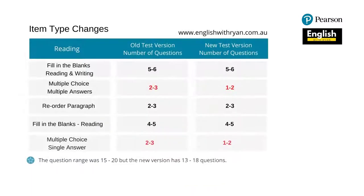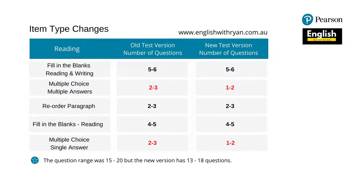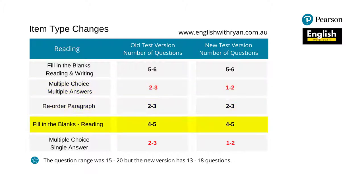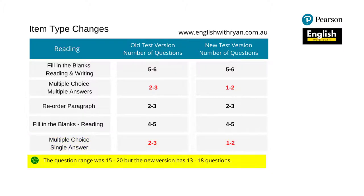In the reading section, fit in the blanks reading and writing was 5 to 6 and remains unchanged. Multiple choice multiple answers was 2 to 3 questions but was reduced to 1 to 2. Reorder paragraph — no change. Reading fit in the blanks — no change. Multiple choice single answer went down from 2 to 3 questions to 1 to 2. The question range was 15 to 20, and the new version has 13 to 18 questions.